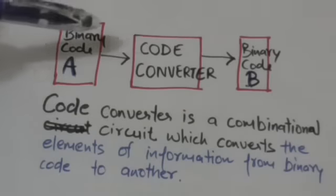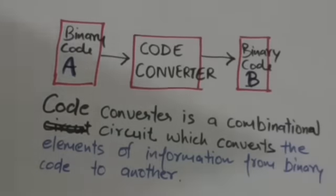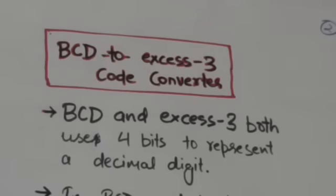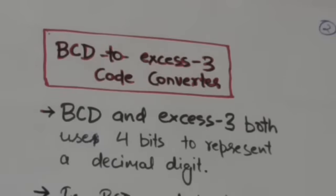A code converter is a combinational circuit which converts elements of information from one binary code to another. This will be more clear when we design a BCD to Excess-3 code converter. A BCD to Excess-3 code converter is a combinational circuit which converts a bit combination of an element as specified by BCD to the corresponding bit combination of Excess-3 code.